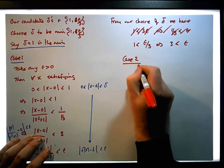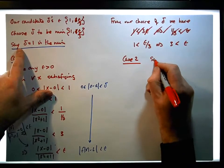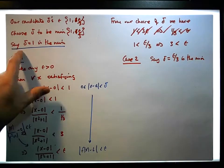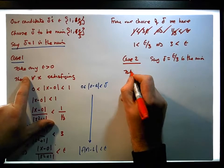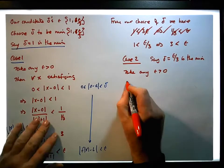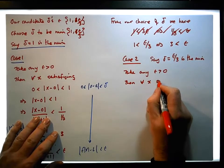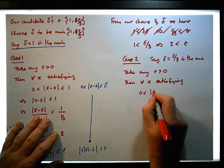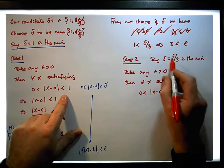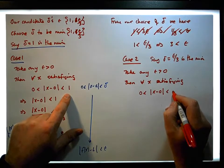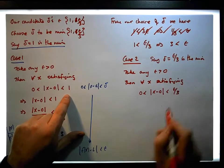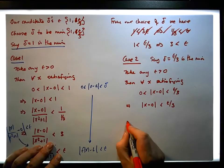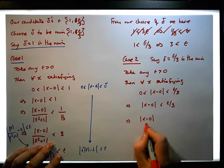Now case two: delta equals epsilon over three is the minimum. We take any epsilon greater than zero, and for each x satisfying zero less than |x minus zero| less than delta, where delta is epsilon over three. This implies that |x minus zero| is less than epsilon over three.